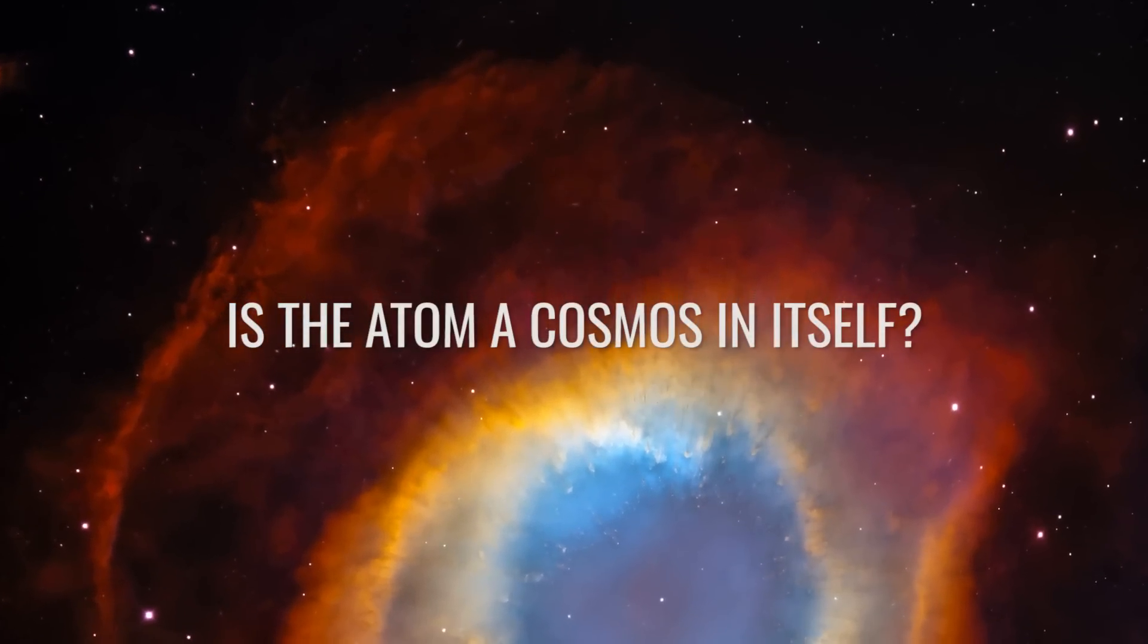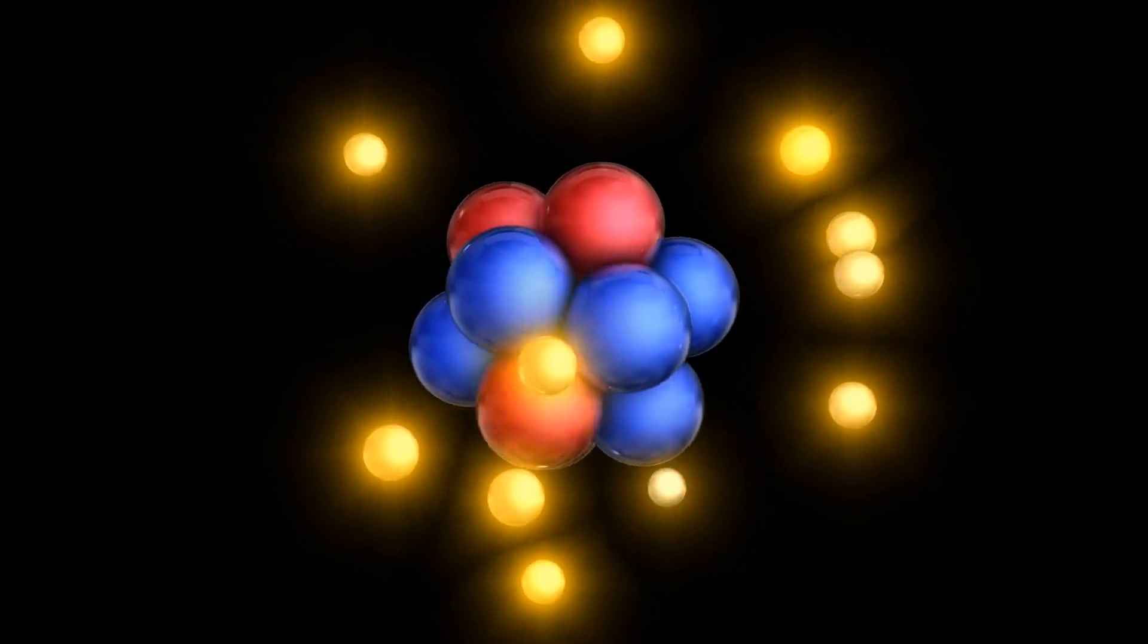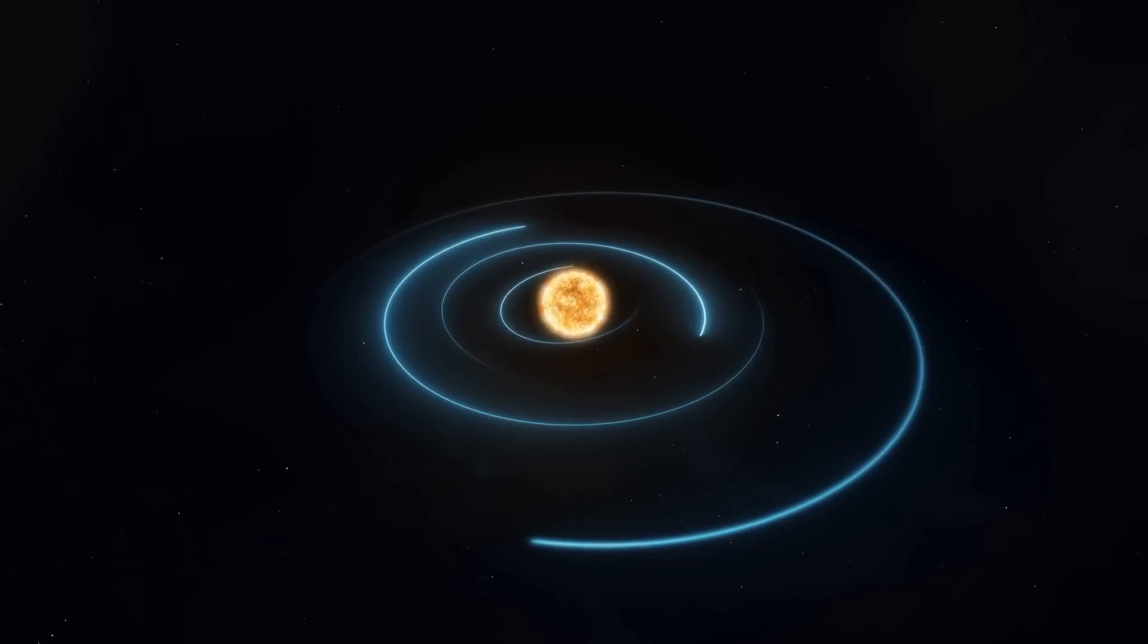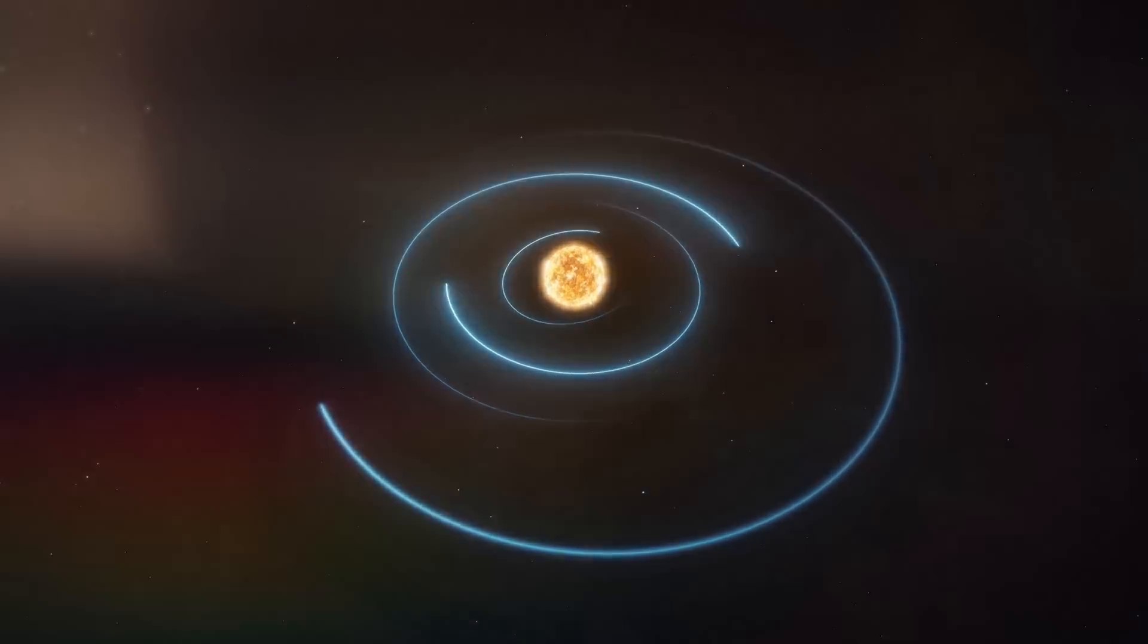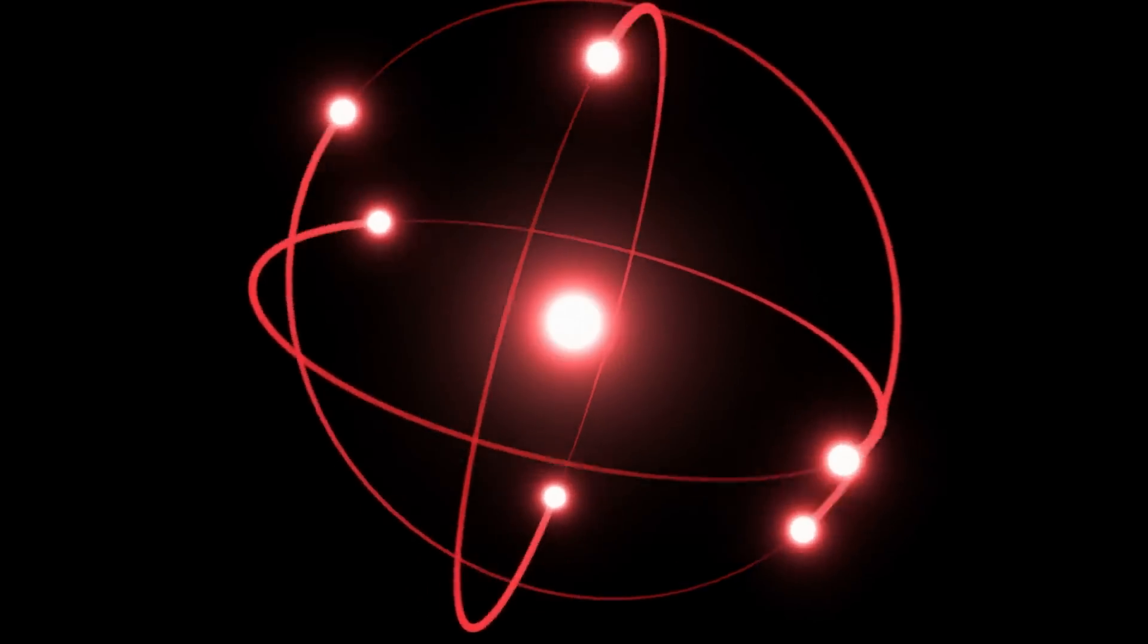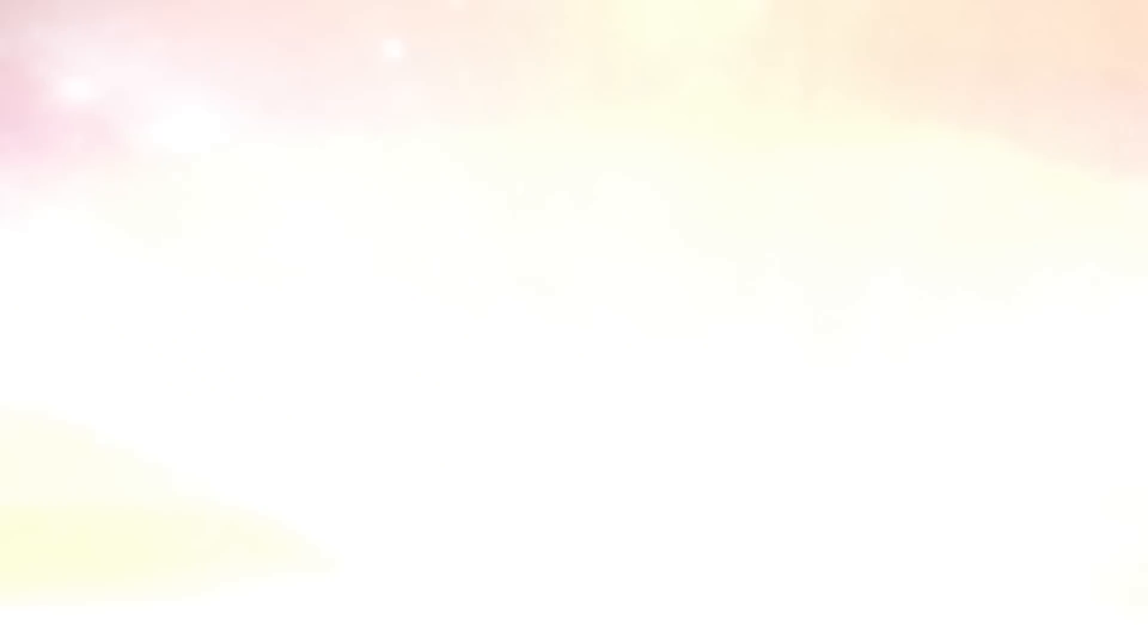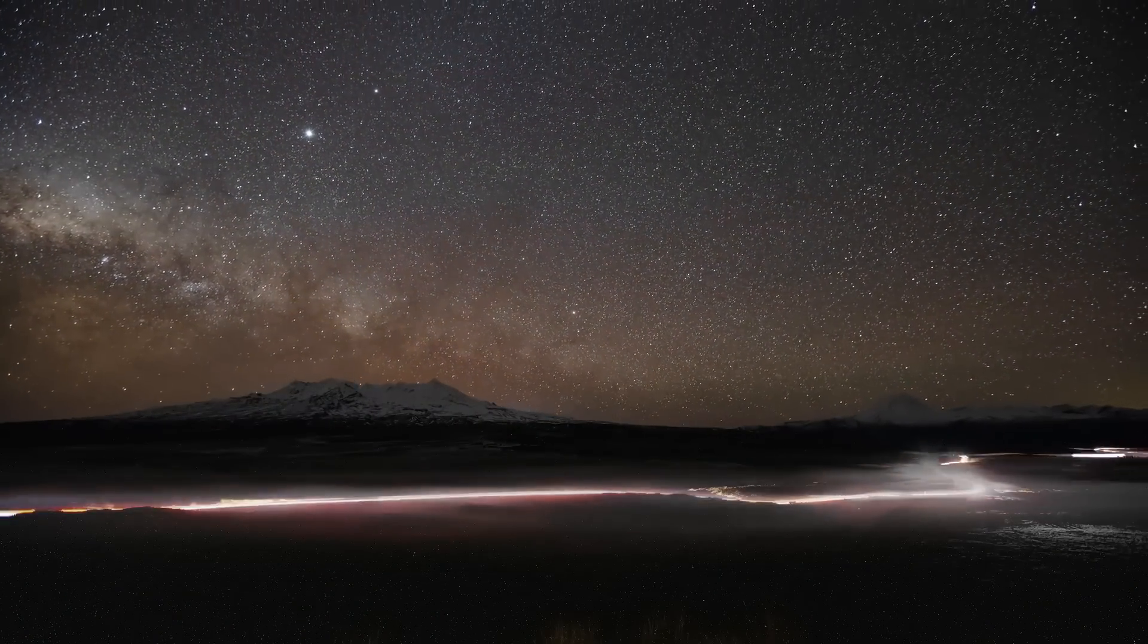Is the atom a cosmos in itself? In the inside of the atom, protons and neutrons dance and are orbited by electrons, just as planets orbit stars and star systems orbit galactic centers. Researchers even claim to have discovered that the rotation speed and orbits of particles inside the atoms of certain elements exactly resemble the orbits of planets in our solar system.